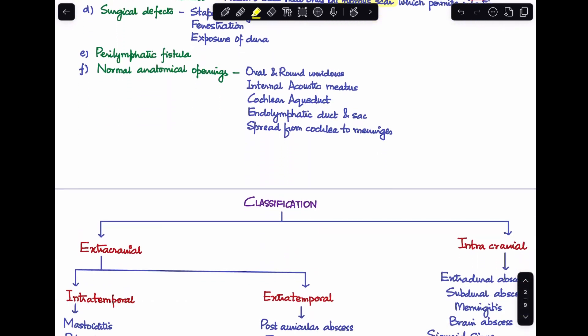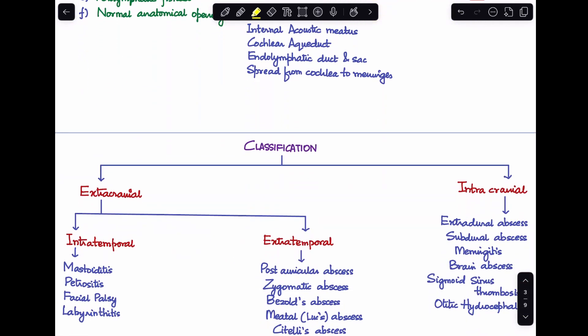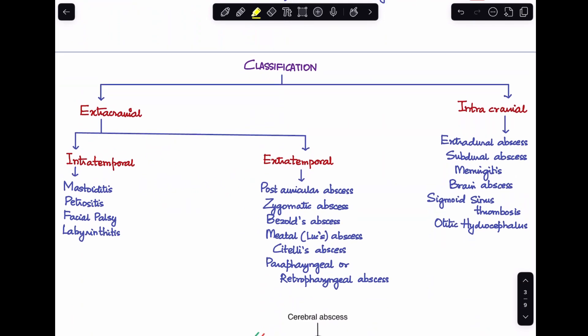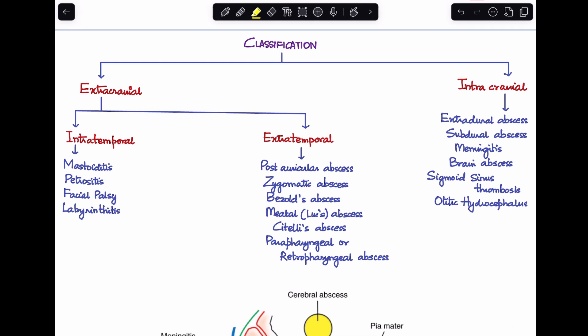Next, let's discuss about how do we classify the complications of CSOM. So the complications of CSOM first can be broadly classified into extracranial and intracranial. And extracranial in itself can be classified into intratemporal and extratemporal. So the intratemporal, meaning the complications that are located within the petrous bone, within the temporal bone, are mastoiditis, petrositis, facial palsy, and labyrinthitis.